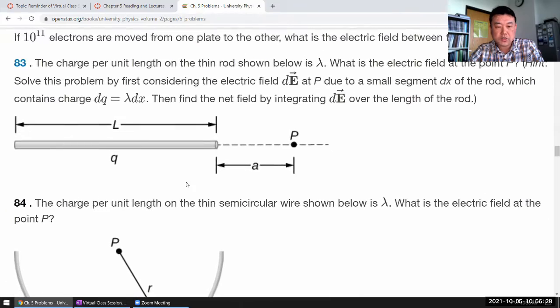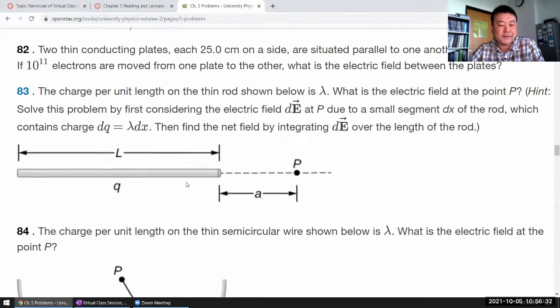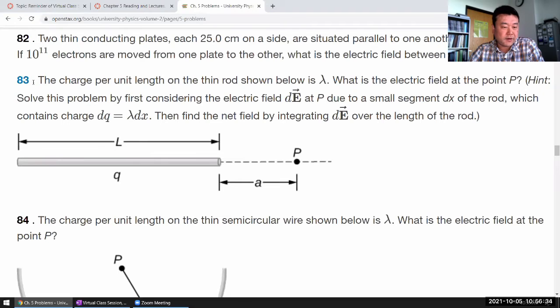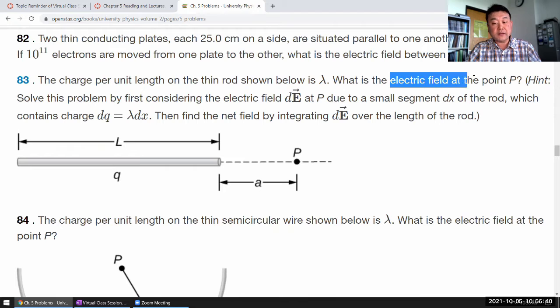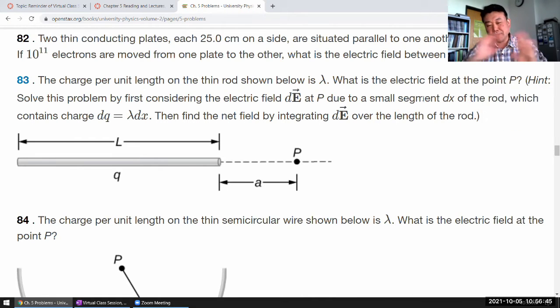So the way the question is worded here, it already refers to the idea of field. You know, question 83. The charge per unit length is shown. It gives the density. And then what is the electric field at point P. So okay, this question presumes the existence of electric field. So it doesn't quite motivate it the way I would want it motivated.